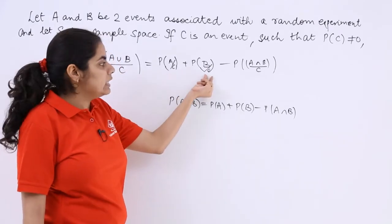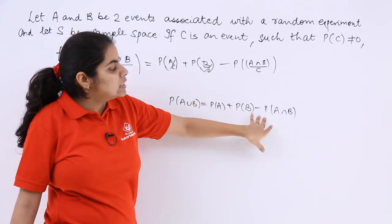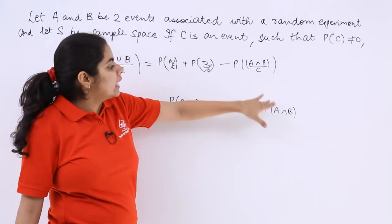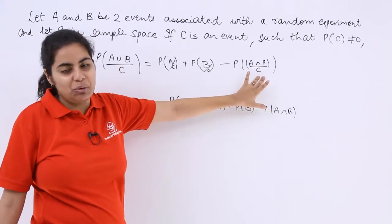So here also in the denominator C, in here also. Then probability with subtraction sign A intersection B here also just C in the denominator.